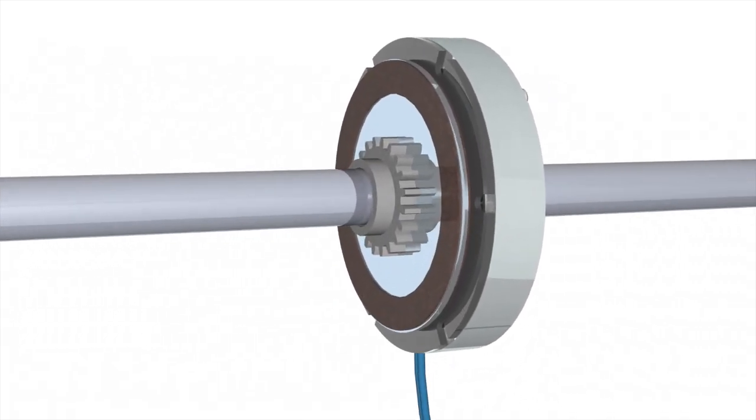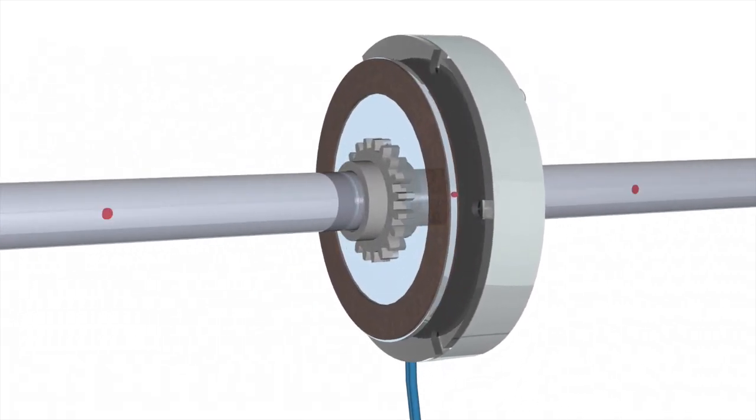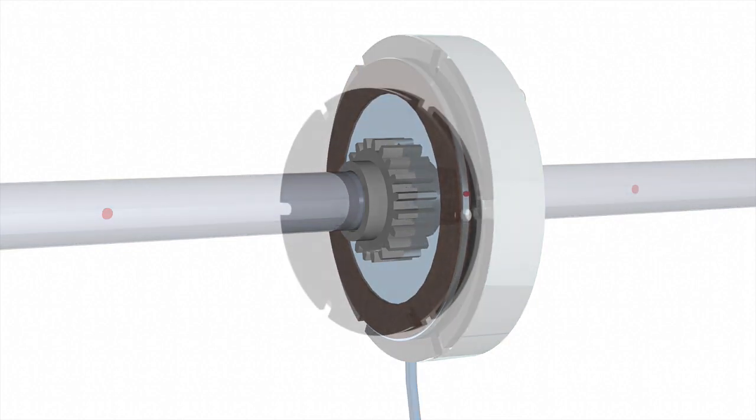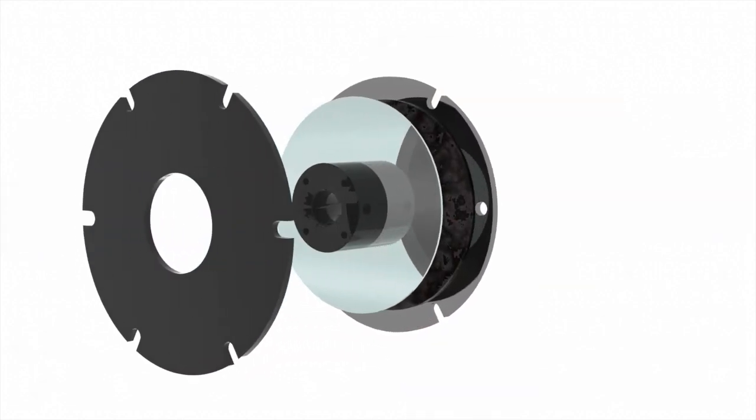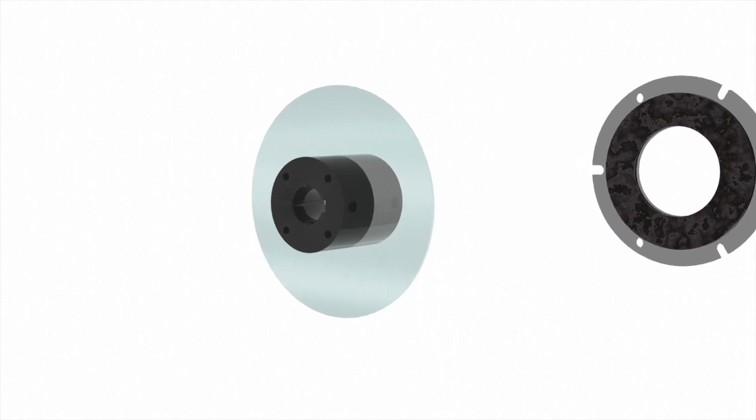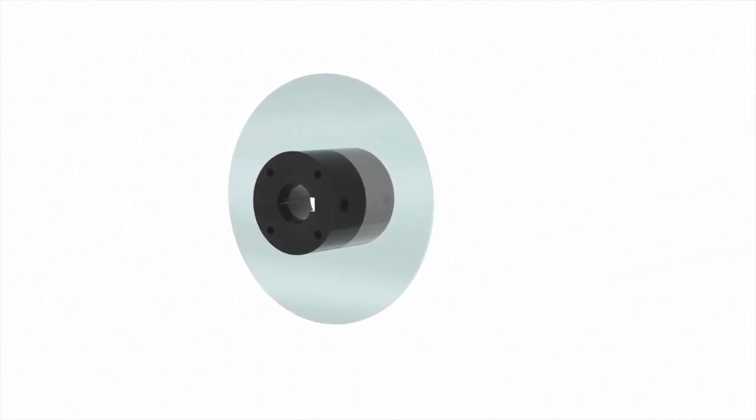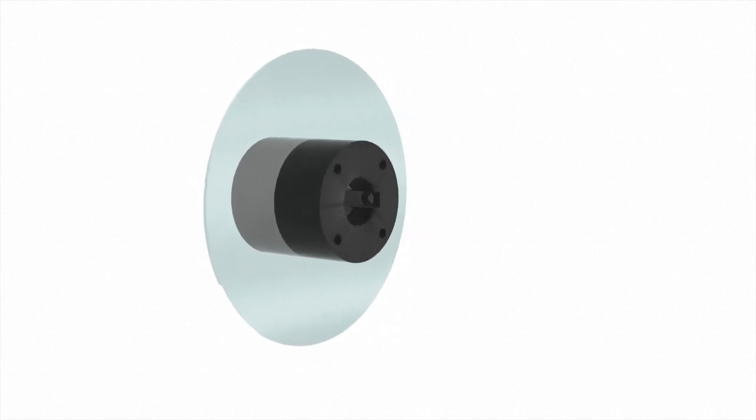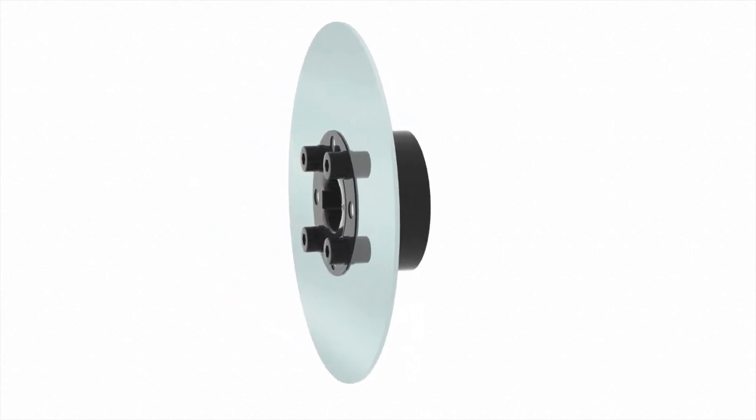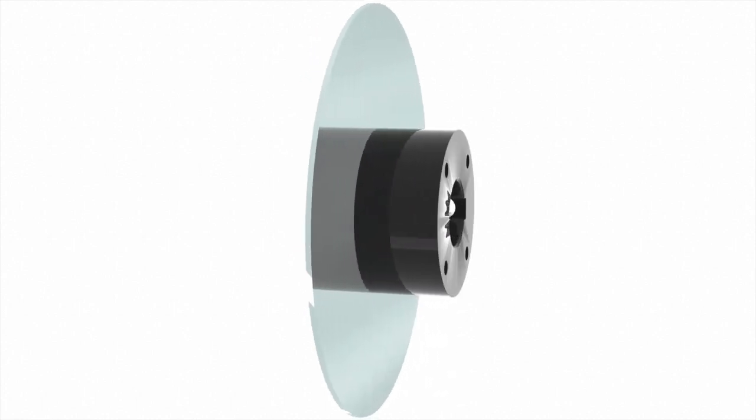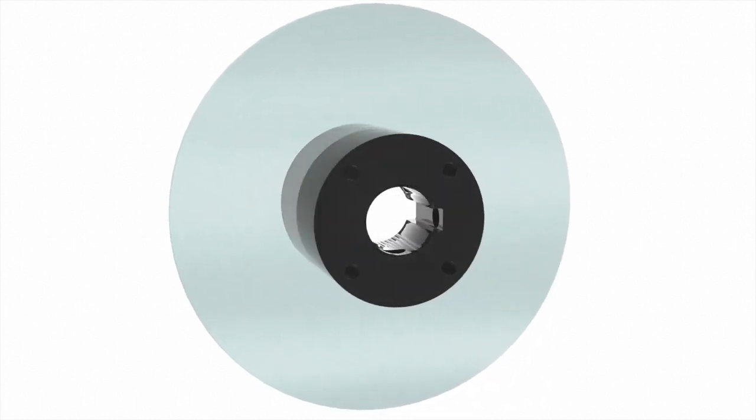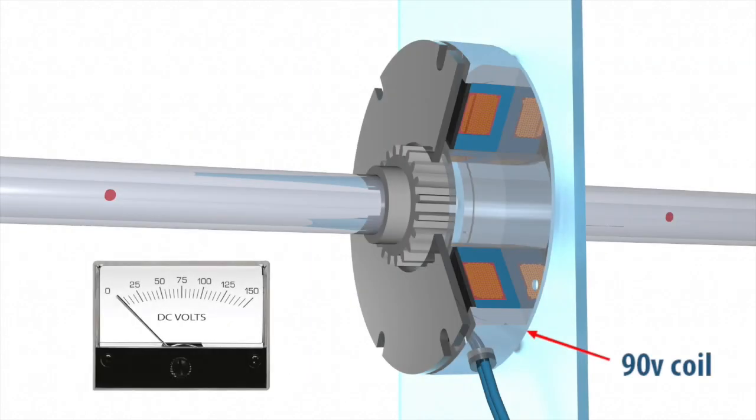For zero backlash applications, the hub is directly connected to the spring steel disc. In these types of brakes, when the friction discs are held, there is no backlash movement at all. Backlash can be critical in high precision applications like medical equipment or microchip processing.